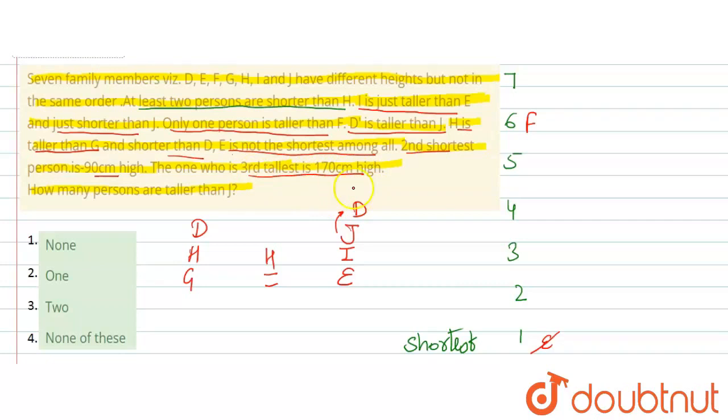Second shortest person is 90 cm high and third tallest is 170 cm high. Ab dekhe, kaise aayega yah? Yahan par J, I and E continuous aayenge. So J, I and E, ek possibility yah hai. And ek case mein F yahan par aur J, I and E because E bottom par nahi ja sakta.